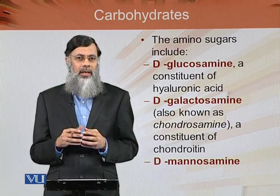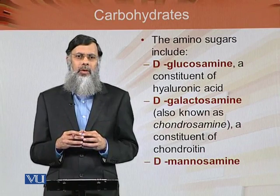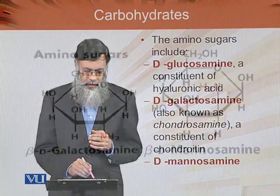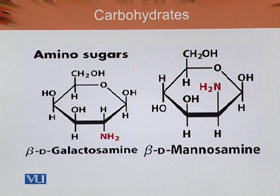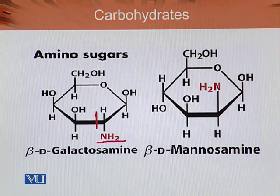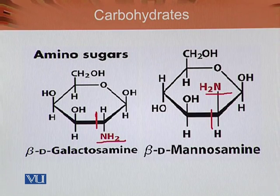In cartilage, these are D-galactosamines. Similarly, if we add an amino group to mannose at carbon number 2, we get manosamine. This is the diagrammatic presentation of galactosamine — we can see that NH2 is attached on carbon atom number 2. In this way, manosamine is formed where mannose is the parent sugar and the amino group is attached at carbon atom number 2. So galactose is converted into galactosamine and mannose is converted into manosamine.